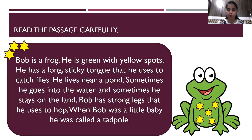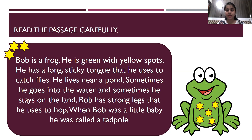Here is a passage for you. Bob is a frog. He is green with yellow spots. He has a long sticky tongue that he uses to catch flies. He lives near a pond. Sometimes he goes into the water and sometimes he stays on the land. Bob has strong legs that he uses to hop. When Bob was a little frog baby, he was called a tadpole. Children, I am giving you one minute to read this passage on your own, and after that I will give you questions based on it.